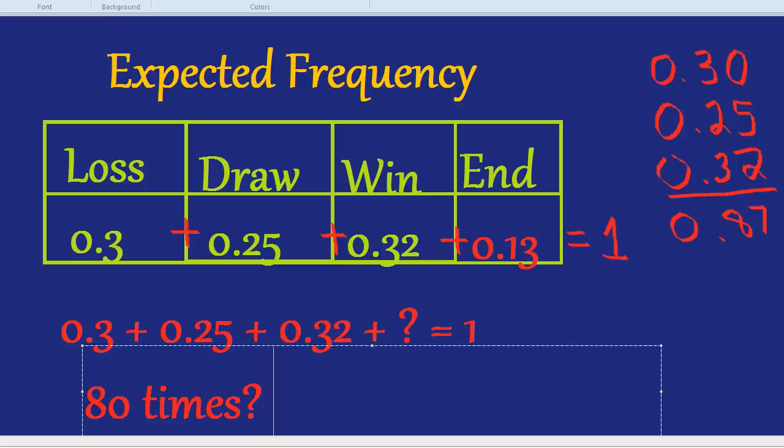So you play the game 80 times. How many times would you expect the game to end? Well, here we do the same technique as before. We multiply the probabilities. So we're going to do the number of times we play the game, which is 80, multiplied by the probability of the game ending, which is 0.13.